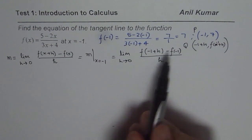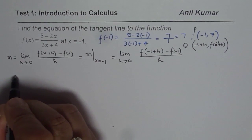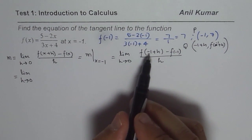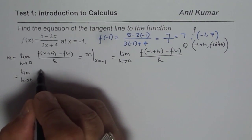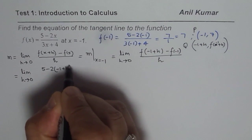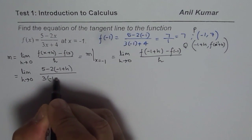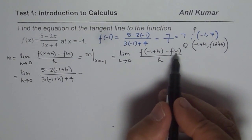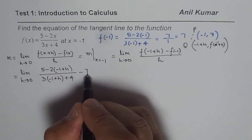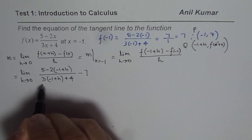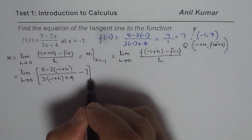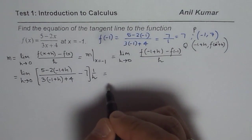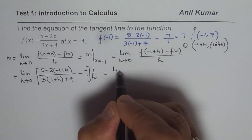Let's now substitute these values into the function and find the answer. We get limit h approaches 0 of: [5 - 2(-1+h)] / [3(-1+h) + 4], minus f(-1) which we already calculated as 7, all divided by h. I'll write divided by h as times 1/h to save space.